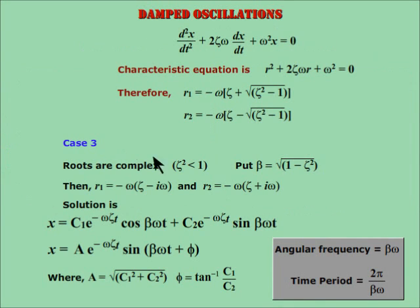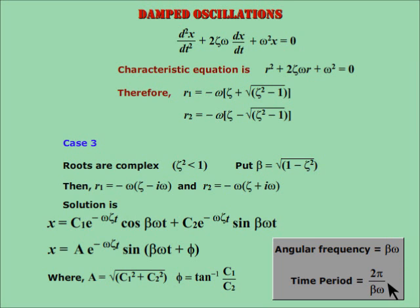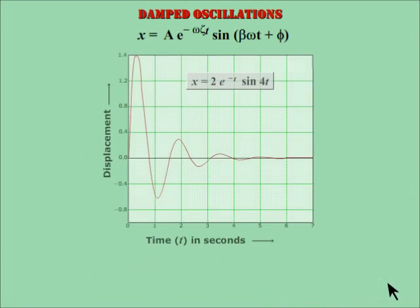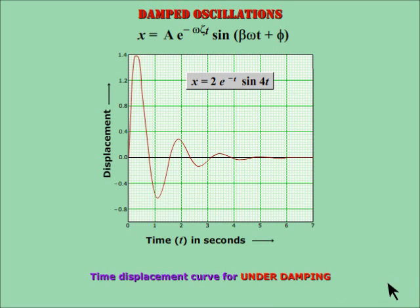Case 3: zeta squared is less than 1. The roots are complex. The solution is as shown. Here, the amplitude has an exponential term and the amplitude becomes zero after some time. Until then, the oscillatory motion continues with an angular frequency as shown. Omega is the natural frequency of the oscillator. Thus, the time period of damped oscillation is given by this relation. This is called underdamped oscillation.